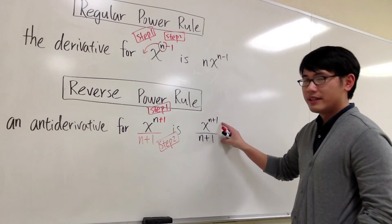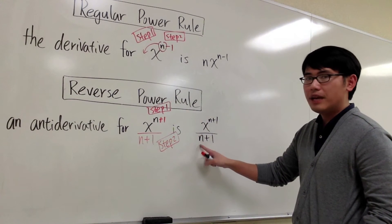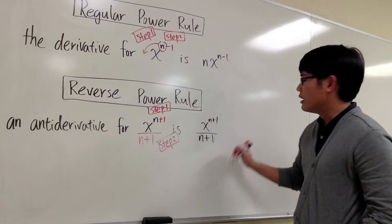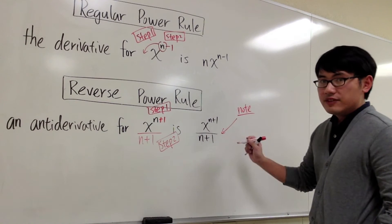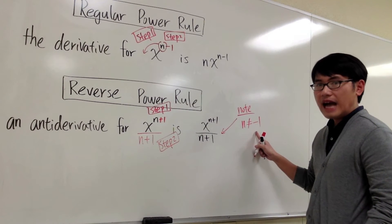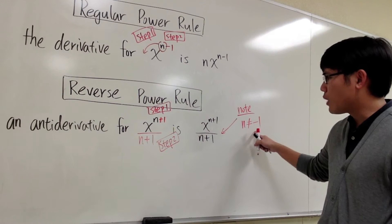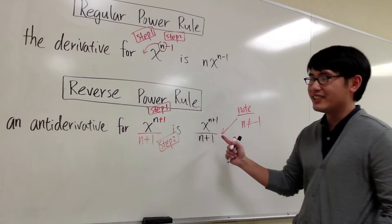However, there's a small technical thing to be careful of. Because we have a fraction, and we have n plus 1 on the denominator. Let me make a note right here. This formula is only good for when n is not equal to negative 1. Otherwise, if n is equal to negative 1, we are going to end up with a 0 on the denominator. And that's no good, right?